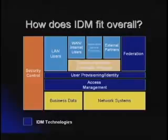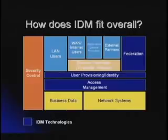This structured model relates to other security technologies. The security controls span all the layers, but the important IDM technologies — user provisioning and identity — cover LAN, WAN, apps, external partners, and then federation. Under user provisioning and identity management you have a user account for everything you do, whether it's logging on, using your speed pass in the morning, or getting on your bank account.